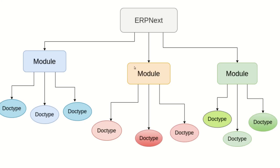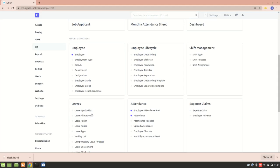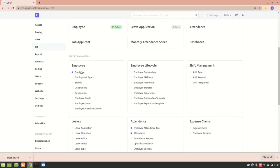These DocTypes are linked together internally. Let me explain with a flowchart. Consider this as the HR module, this as the CRM module, and this as the Selling module. In the HR module we have DocTypes such as Employee, Leave Application, and Designation. All of these DocTypes are linked together internally — I'll show you how.